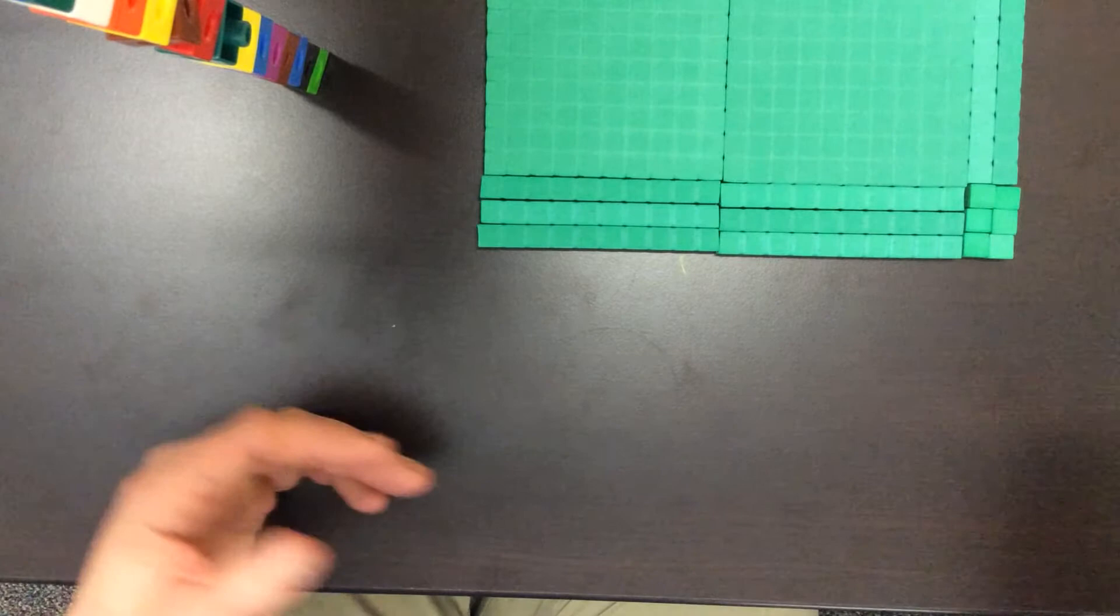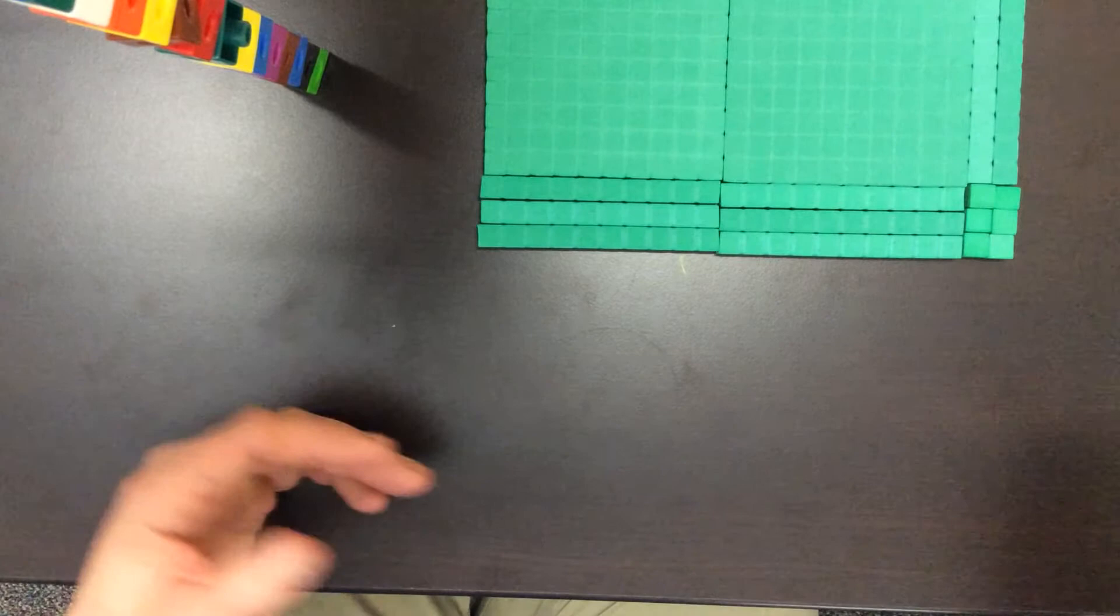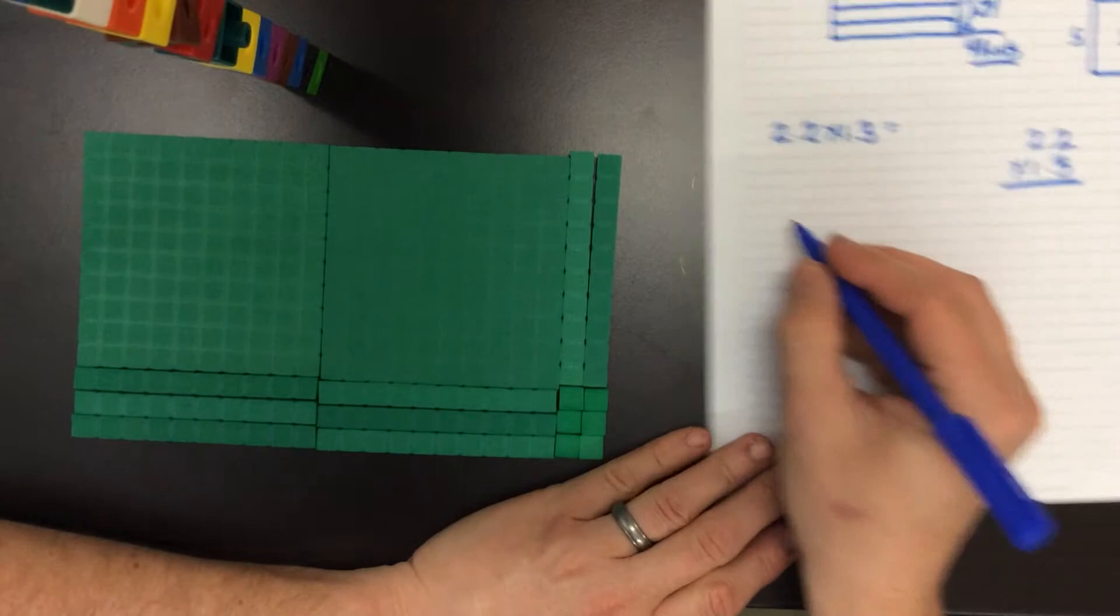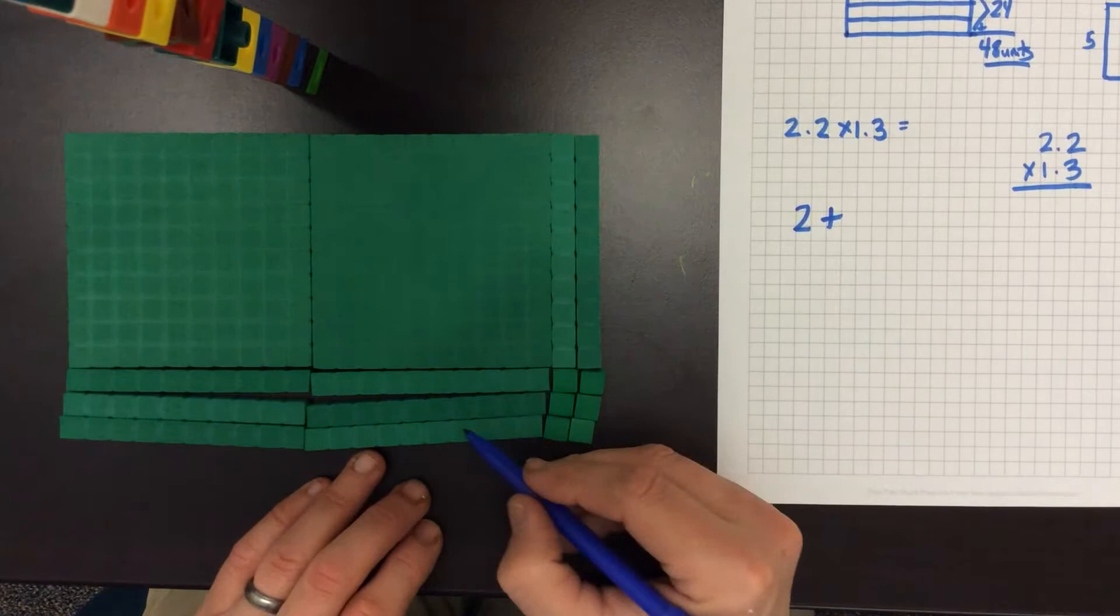Now does it work? Well let's think about this. We have in this situation two wholes, so we're going to add those two wholes up first. We have eight tenths.